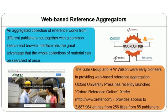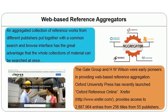Instead of going to different publisher sites separately, we can aggregate services of one subject together. The Gale Group and HW Wilson were early pioneers in providing web-based reference aggregators. Oxford University Press launched Oxford Reference Online at www.xrefer.com, which provides access to about 2,887,964 entries from 256 titles from 55 publishers — aggregating 55 various publishers into one service.